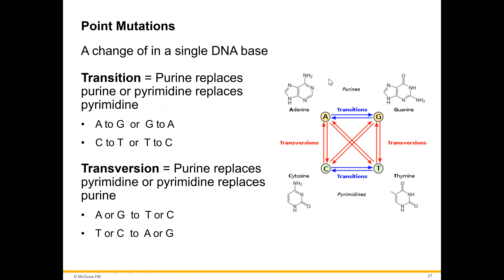Now we'll look at different types of mutations in more detail. Here's our point mutation: a change in a single DNA base, at one single spot. There are two types of point mutation: transition and transversion.